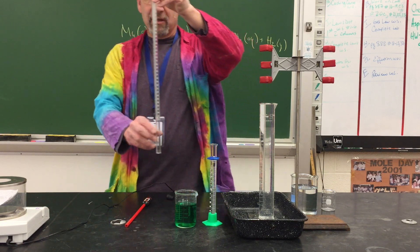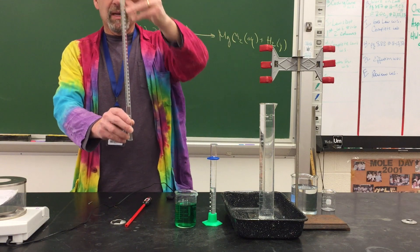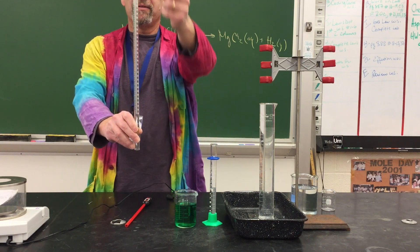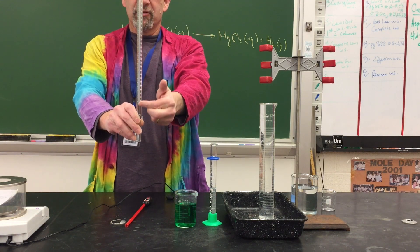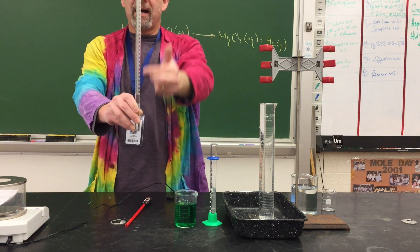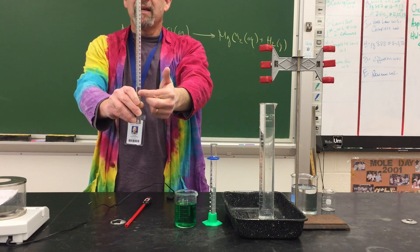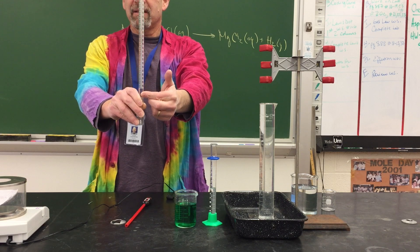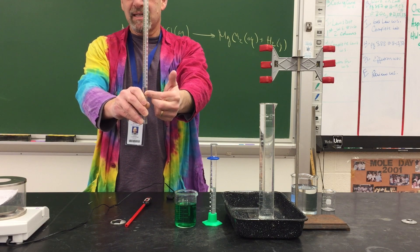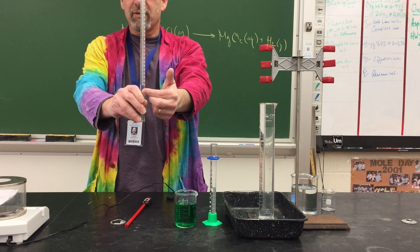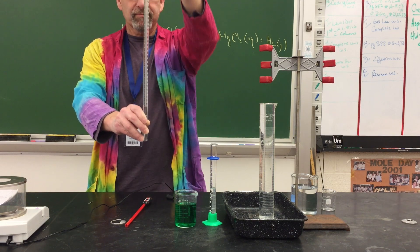The Udometer is a long tube that, when held with the open end down, has numbers reading from top to bottom, zero down to 50. This scale will help us measure the volume of gas generated by the reaction inside the Udometer.